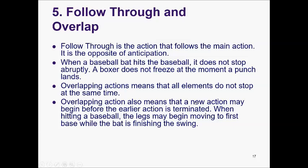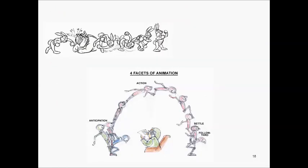Principle number five is follow through and overlap. Follow through is the action that follows the main action — the opposite of anticipation. A baseball bat does not stop abruptly when hitting the ball; a boxer does not stop at the moment a punch lands. Overlapping action means all elements do not stop at the same time. A new action may begin before the earlier action is terminated — for example, the legs may begin moving to first base while the bat is still finishing the swing.